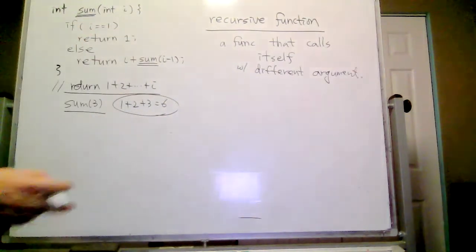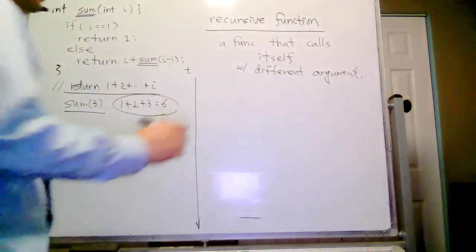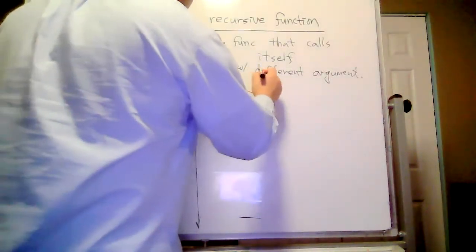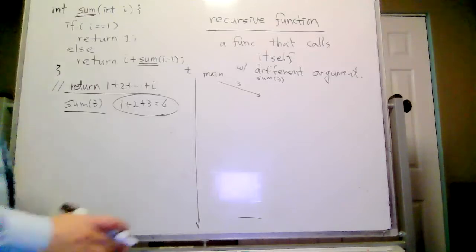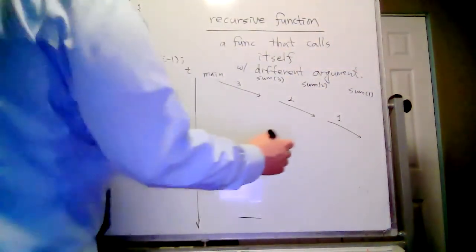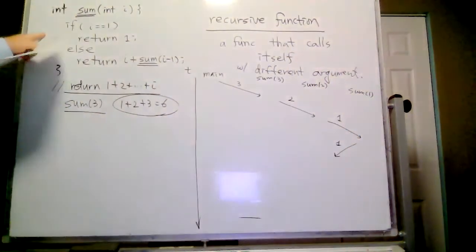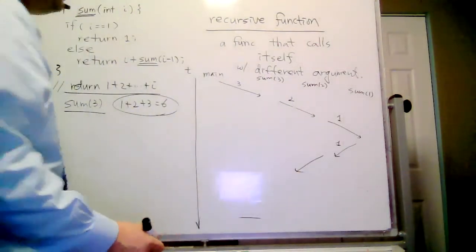Another way to show how it works that might be helpful is this. Let's think about the time frame. From main, sum(3) is called with input three. Then sum(2) will be called. Go to else again and sum(1) will be called, with inputs two and then one. In sum(1), it will return one as the base case — no more recursion. Given that one as a return value, i plus the return value will be returned to the caller.